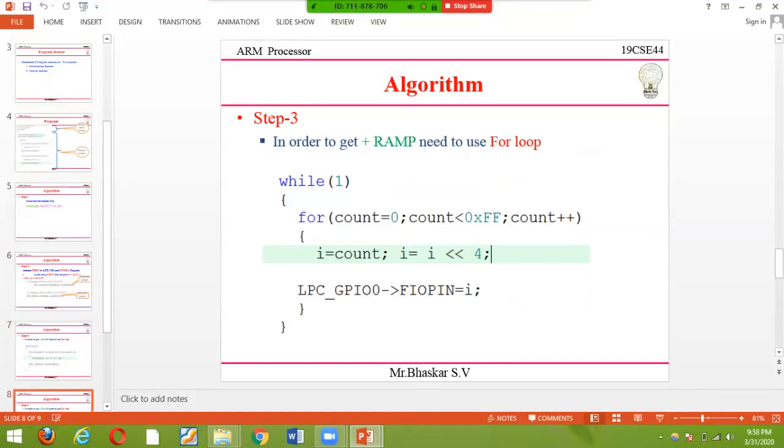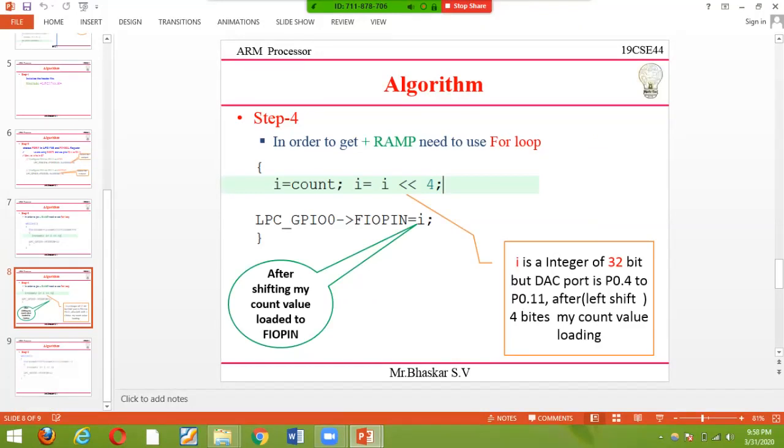Finally, we load to the FIO pin. High is an integer, a 32-bit value. The target port is PORT0 bits 4 to 11. After left shift 4 bits, the count value loads. I can't put high directly because the count value would load to bit 0. I need to load after 4 bits, so I use left shift 4.